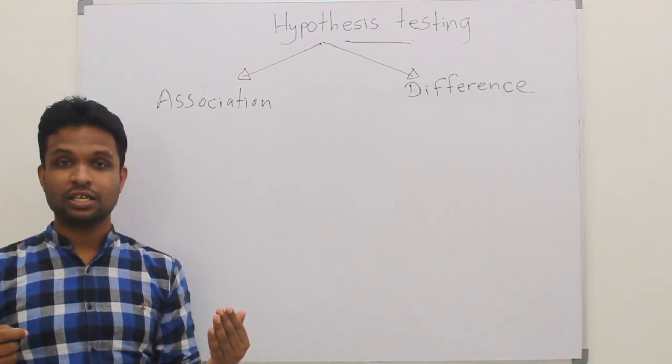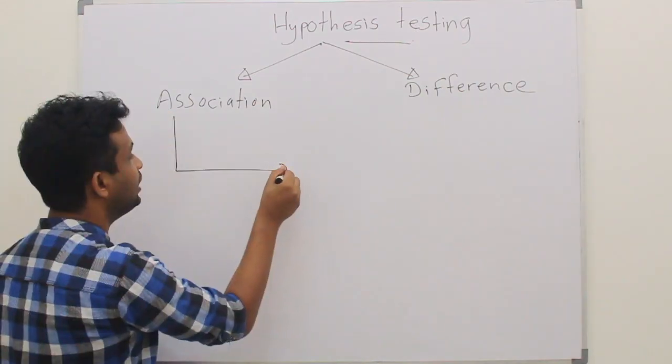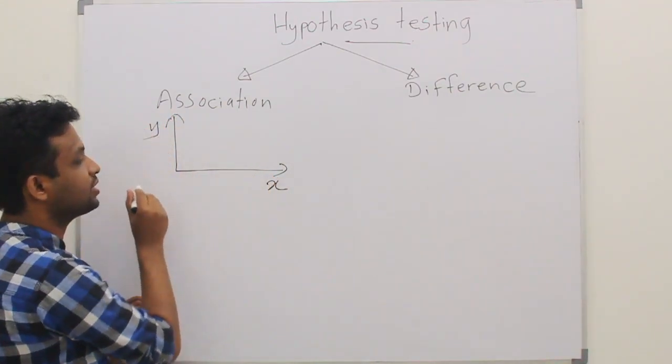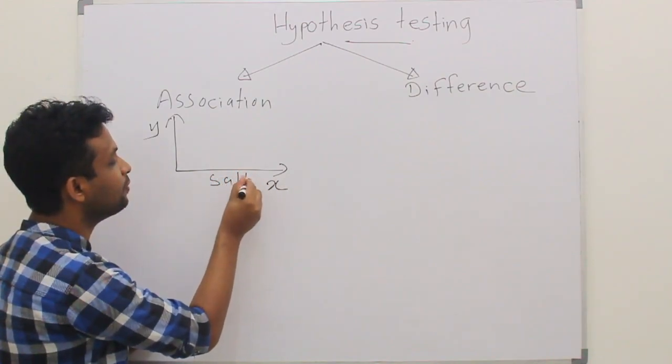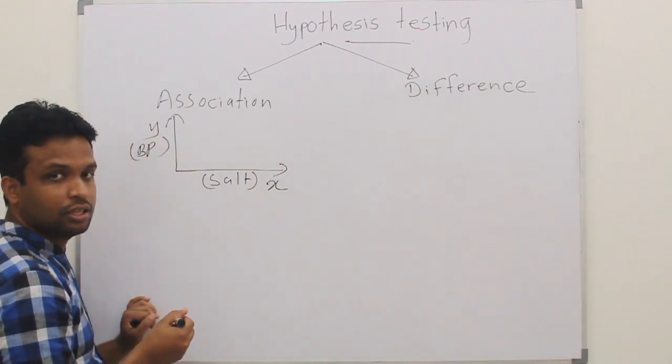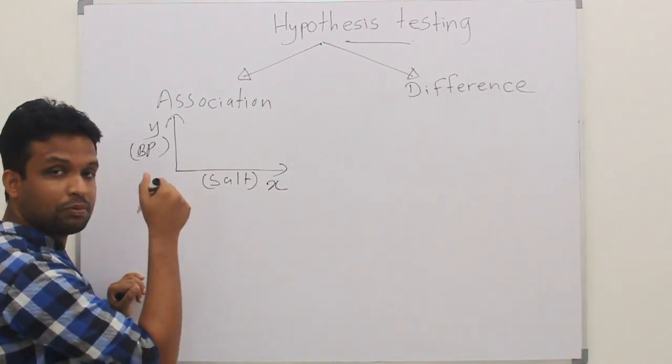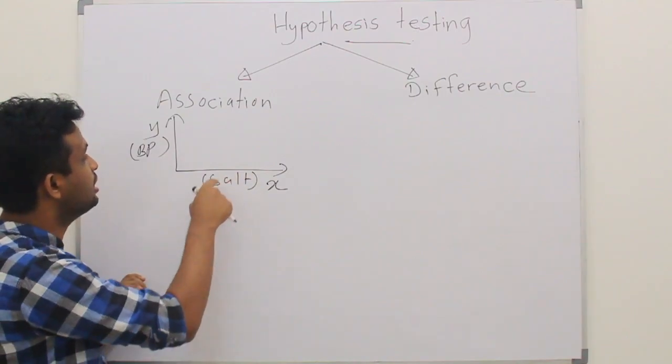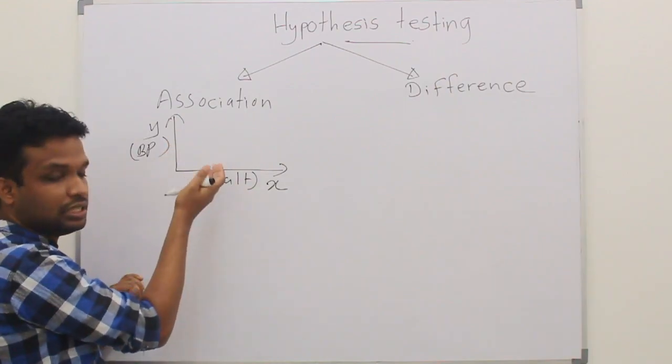What are the two variables? Salt consumption and hypertension. We can plot them in two axes, X-axis and Y-axis. We can plot the salt consumption here and blood pressure in the Y-axis. You can plot the average monthly consumption of salt in the X-axis and blood pressure against the salt consumption in this graph.